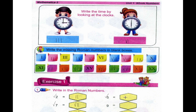Here we have 5, single V, which shows us 5. For 9, IX shows us 9. For 16, XVI — X, V, I — shows us 16. For 20, XX shows us 20.